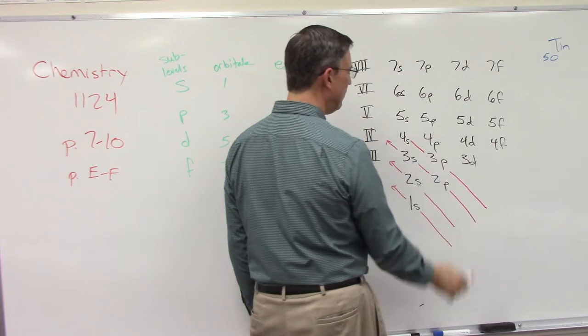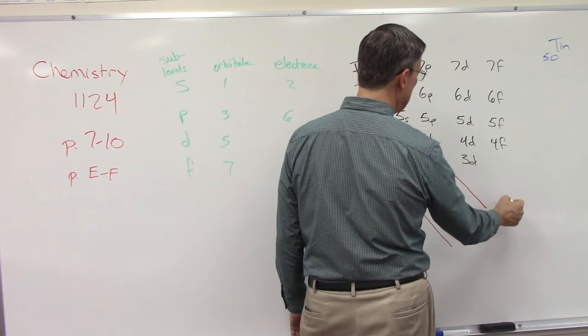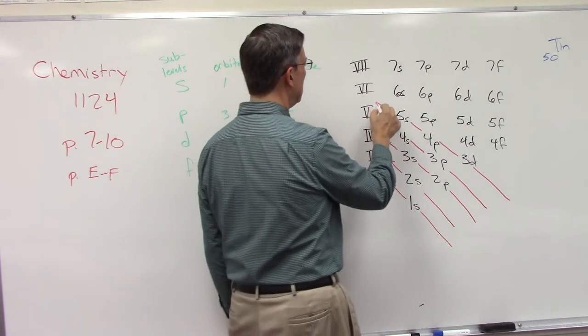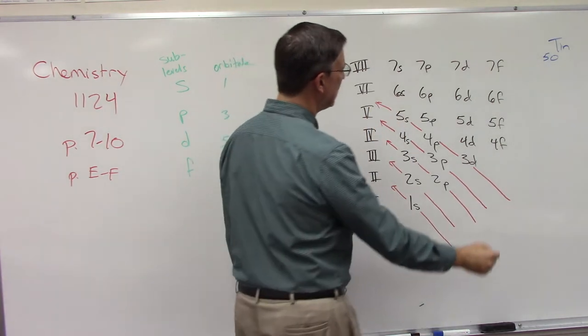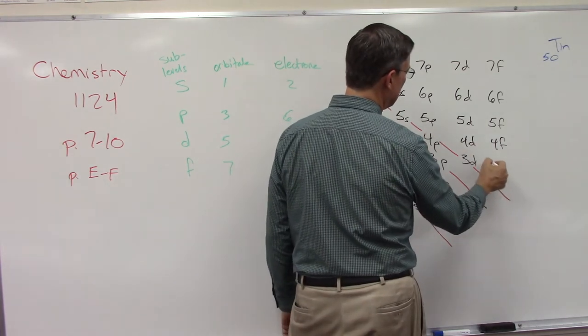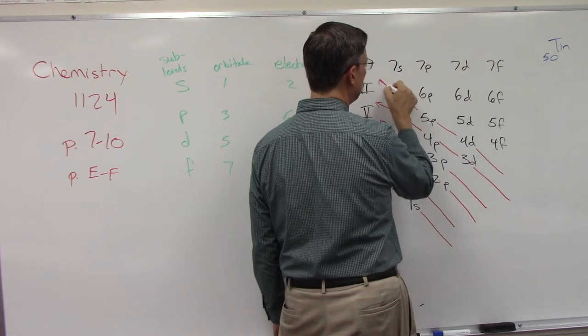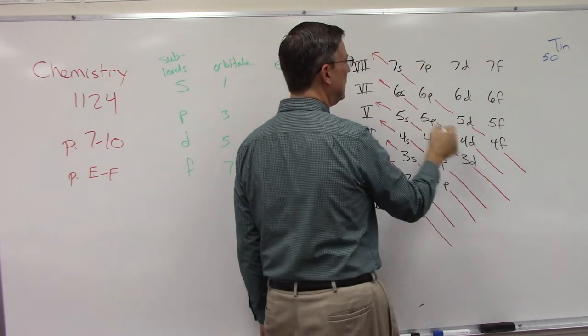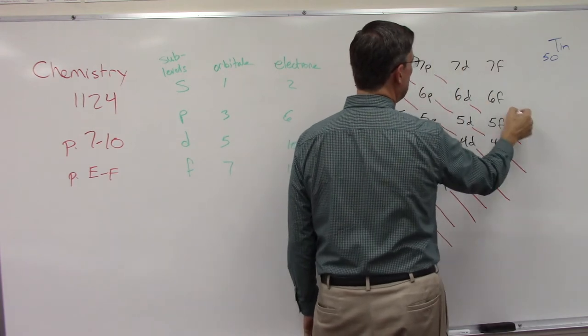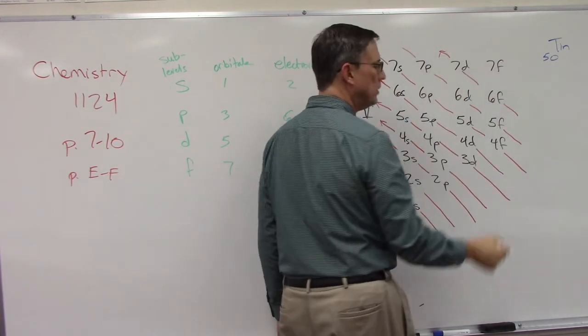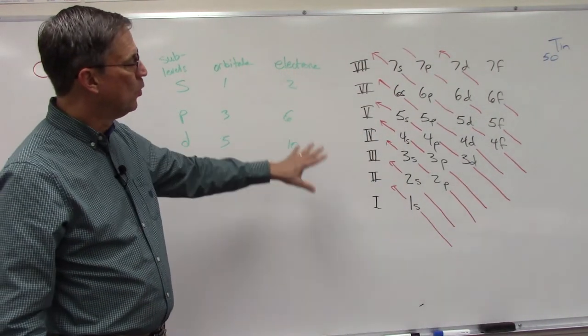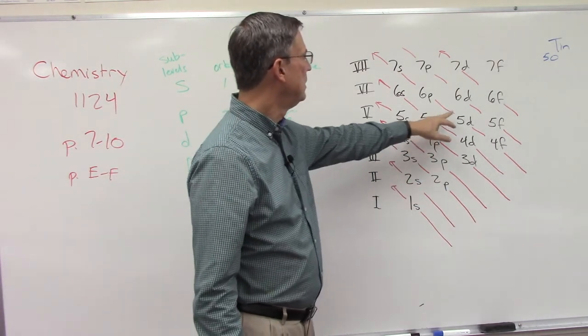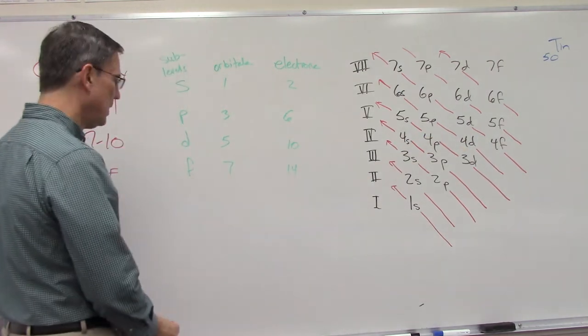When 3s is full, here comes the arrow, we fill 3p and then 4s. Then we come back and fill 3d followed by 4p followed by 5s. Then we come back after 5s, then we start to fill in 4d, 5p, 6s, then we come back and fill in the 4f, 5d, 6p, 7s and then kind of round it out here. That helps us see the order in which they fill. All we have to remember is a p is worth 6 electrons, the d's are worth 10 electrons.